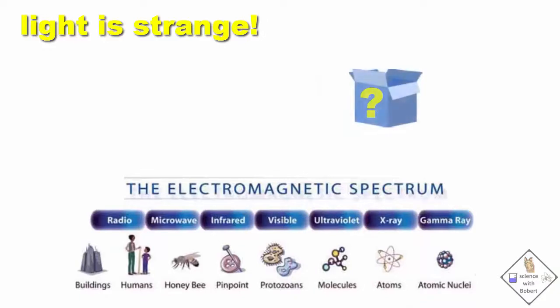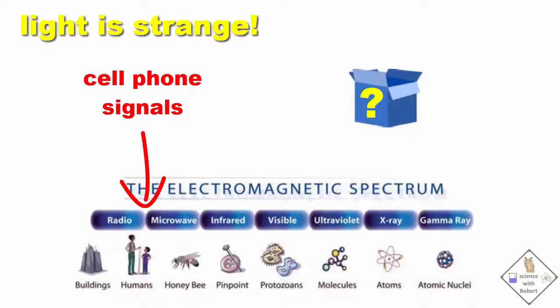If we are going to build a cell phone signal blocker, we need to know where cell phone signals fall on the electromagnetic spectrum. Cell phone signals are in the region between radio and microwaves, so their wavelength is between several feet down to the size of roughly a honey bee.